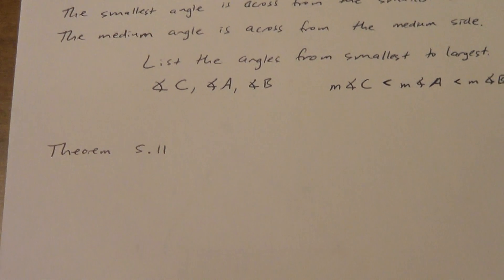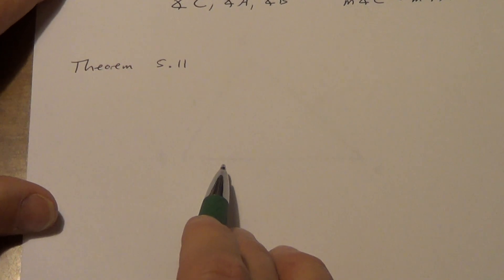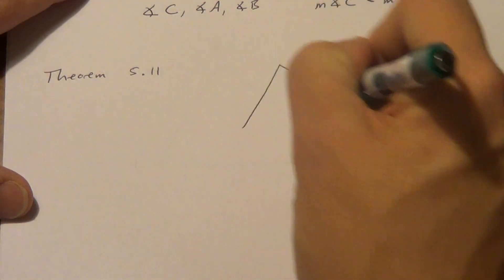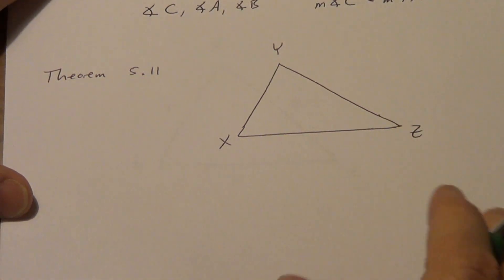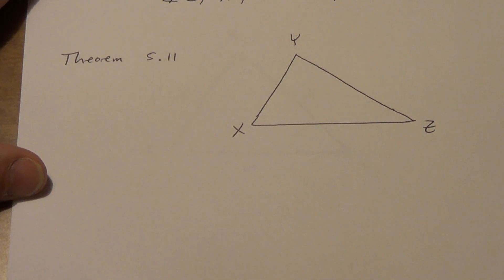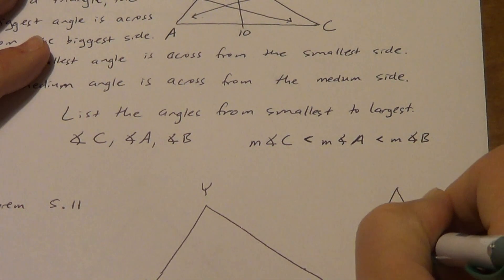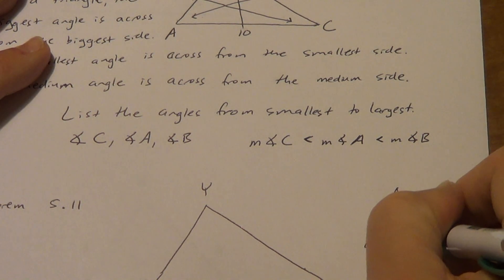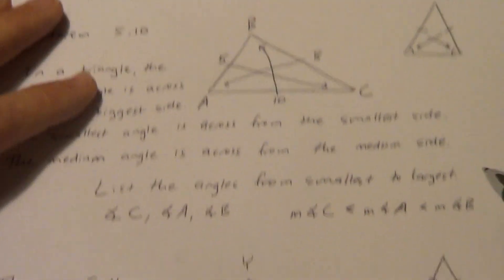Now let's look at Theorem 5.11, which is the converse of Theorem 5.10. In Theorem 5.10 I gave you the side lengths; down here I'm going to give you the angle measurements. The book says: if one angle of a triangle is larger than another angle, then the side opposite the larger angle is longer than the side opposite the smaller angle. It's the same idea as the converse of the base angle theorem for isosceles triangles — there we worked from angles toward sides.